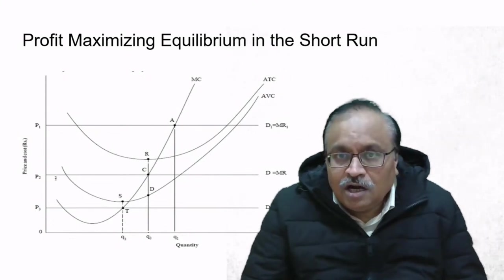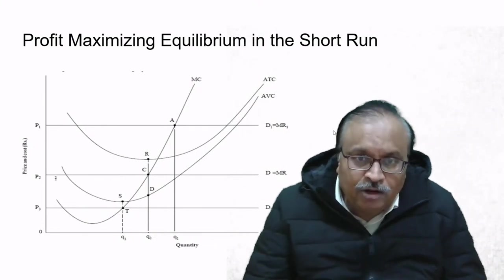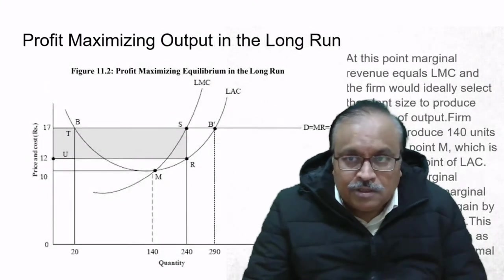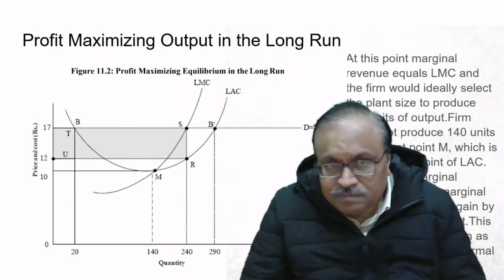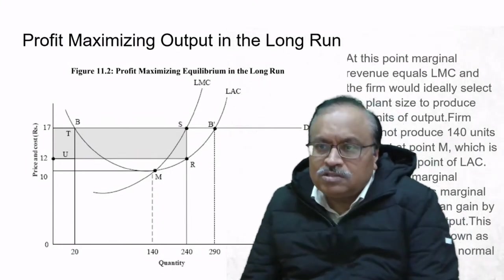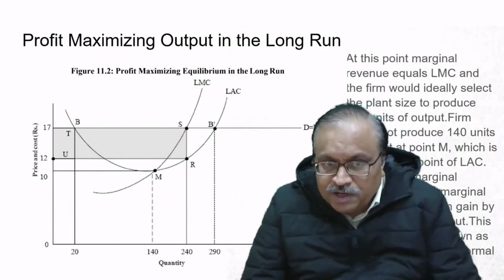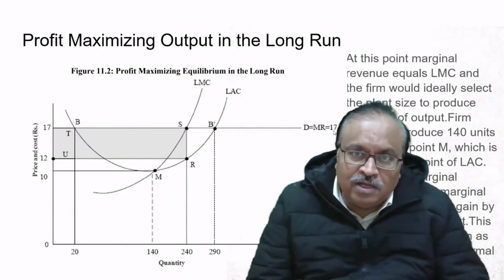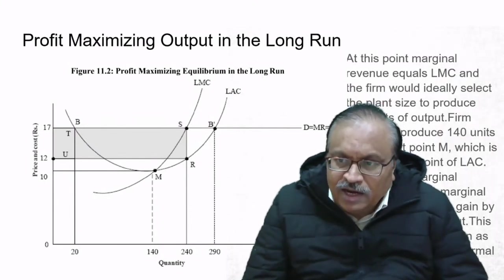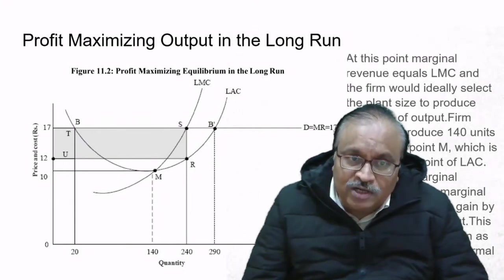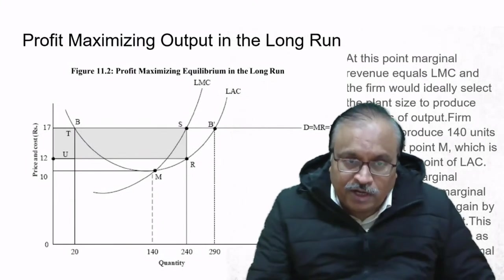We can pursue production if the price is lower than the average total cost curve, but profit maximizing equilibrium can only come if we move to the price band equivalent to demand. In the long run, marginal revenue equals LMC (long run marginal cost), and the firm would select the plant size to produce 240 units of output. At 140 units, marginal revenue exceeds marginal cost, so our optimum results only come when we move to quantity 240.